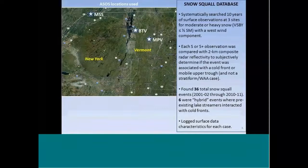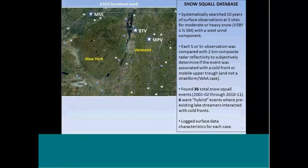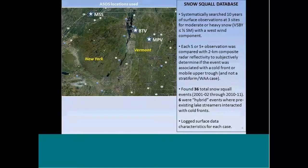As far as developing the snow squall database, we took three ASOS sites in our forecast area — Messina, New York; Burlington; and Montpelier, Vermont — and we systematically searched through 10 years of surface data at these three sites, looking for occurrences of moderate to heavy snow with visibility of a half mile or less and a westerly wind component. That was done to filter out the typical nor'easter northeast-wind type events and make the database more manageable.